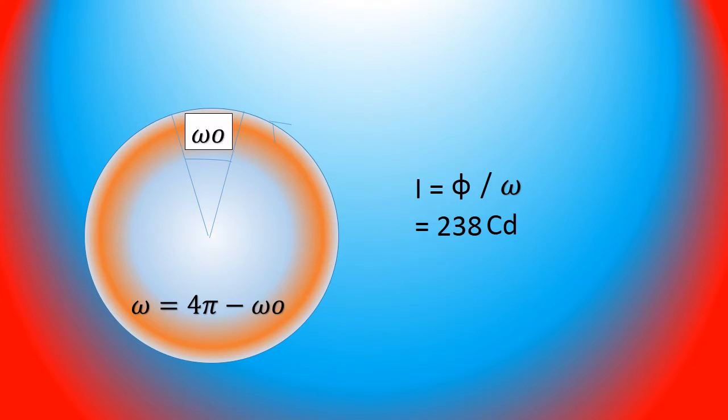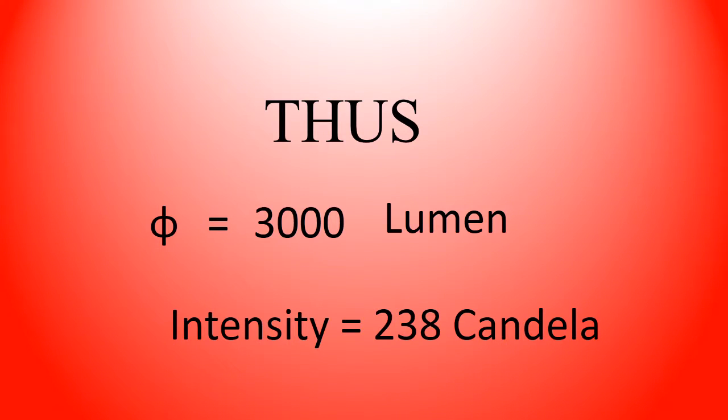Now this 3000 lumen spread throughout the space in 4π direction is converted into a candela power of 238 candela uniformly distributed around the lamp. Therefore, the 3000 lumen are not uniformly distributed to create an intensity of 238 candela uniformly around the 200 watt GLS lamp.